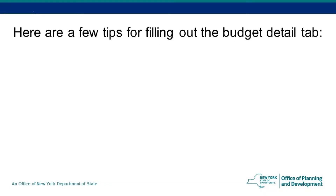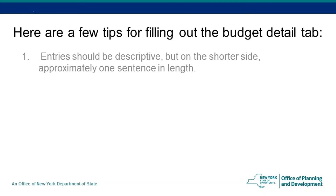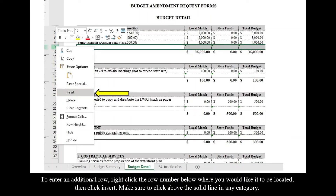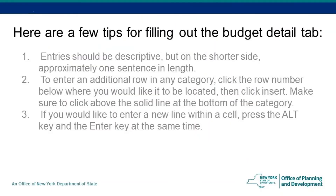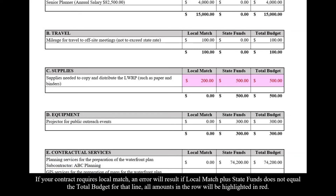Here are a few tips for filling out the Budget Detail tab. Entries should be descriptive but on the shorter side, approximately one sentence in length. To enter an additional row in any category, click the row number below where you would like it to be located, then click Insert. Make sure to click above the solid line at the bottom of the category. If you would like to enter a new line within a cell, press the ALT key and ENTER key at the same time. If your contract requires local match, an error will result if local match plus state funds does not equal the total budget for that line, and all amounts in the row will be highlighted in red.